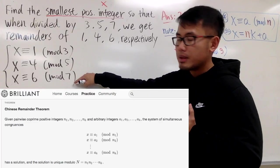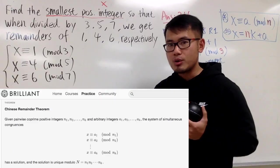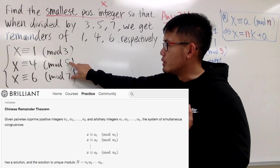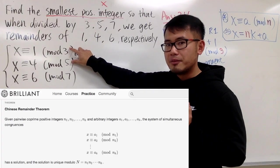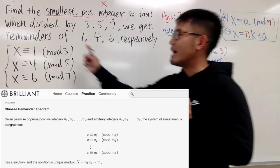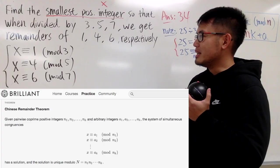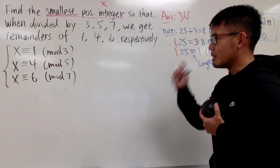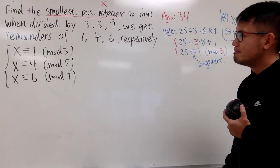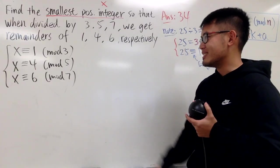Look at the moduli: 3, 5, and 7. These numbers are pairwise relatively prime — you can pick any two of them and their greatest common divisor is 1. GCD(3,5)=1, GCD(3,7)=1, GCD(5,7)=1. The Chinese Remainder Theorem guarantees we will find a solution when this holds. If they were not pairwise relatively prime, you may or may not get a solution.